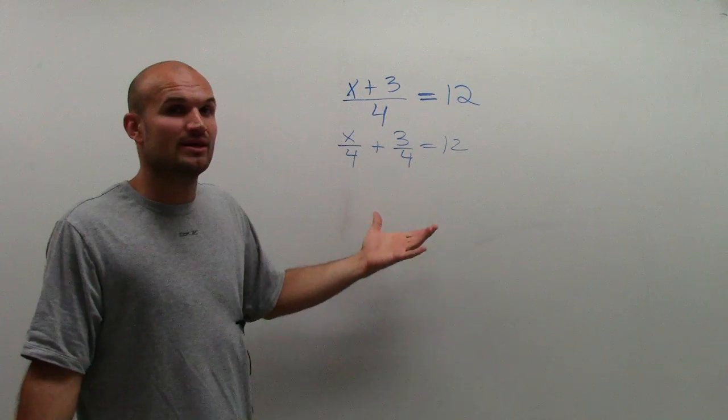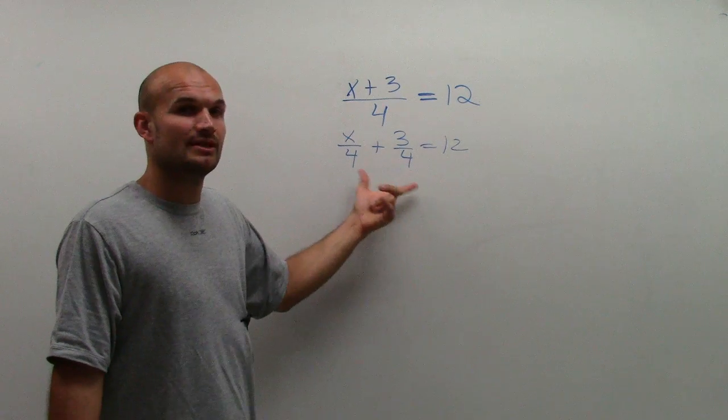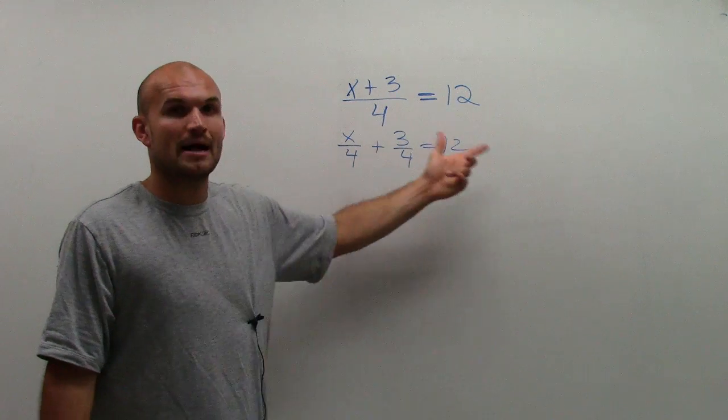So what I prefer to do is get rid of the fractions. So even on this problem, you can get rid of the fractions. And what would you do? To get rid of the fractions, you'd have to multiply by 4, right?